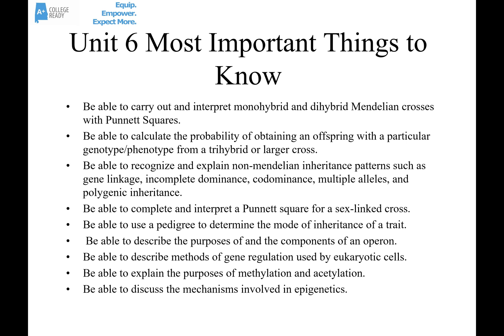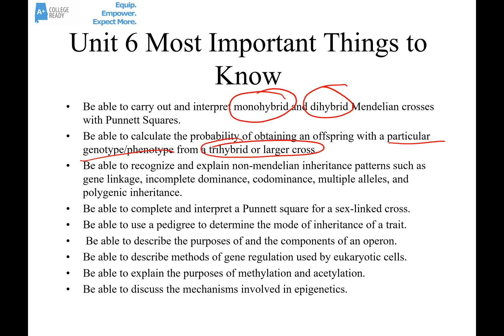Here are the most important things to know for unit six. First, make sure you can carry out and interpret Mendelian crosses with Punnett squares — both a monohybrid cross and a dihybrid cross. Also make sure you can calculate the probability of obtaining offspring with a particular genotype or phenotype from a trihybrid cross or a larger cross.